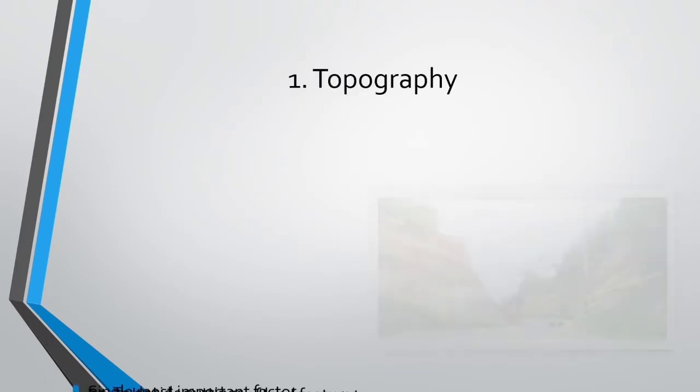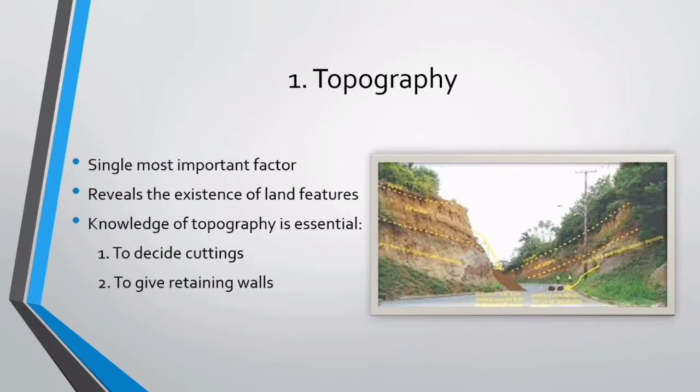The first one is topography. The landform of a region is the single most important factor that controls the selection of alignment of a road project. Topographic maps would reveal the existence of various land features like valleys and inflowing streams, hills and their undulations, and plateaus and plains with all their varying configuration. Knowledge of all such features is not only important but very essential for the right alignment.